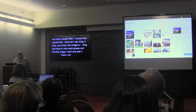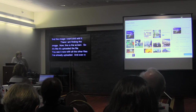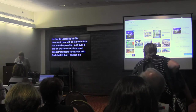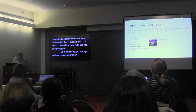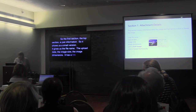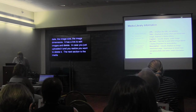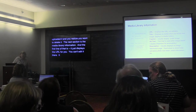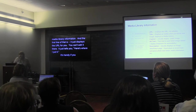Here I am finding the image. Once it's uploaded, you see it with all the other files already uploaded. Over on the right are some very important things people sometimes skip. I divided the right sidebar into three sections. The first section — the top — is just information: a small preview, the file name, upload date, image size, image dimensions, a link to edit the image, and a link to delete it in case you just uploaded it and want to start over. The next section is the media library information. The first line displays the URL for you — you can't edit it there, it's just telling you where it put the file. That's handy if you ever want to email someone a photo you used on the blog.